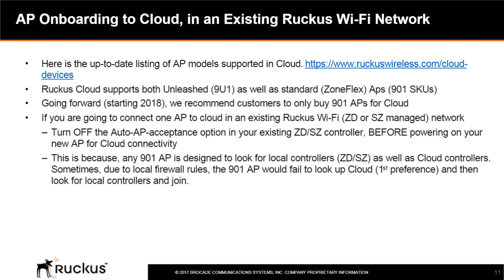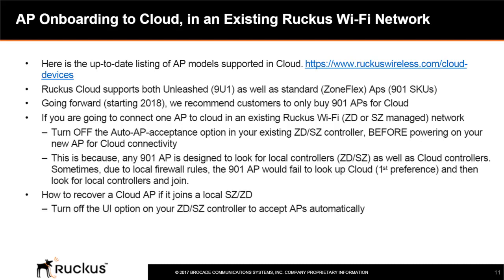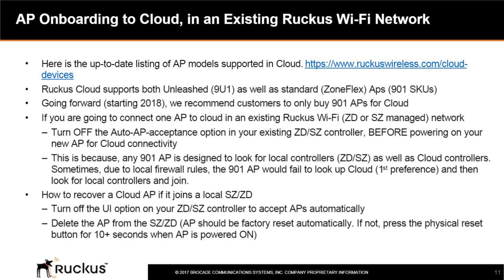Any 901 AP is designed to look for local controllers such as Zone Director or Smart Zone, as well as cloud controllers. Sometimes, due to local firewall rules, 901 APs fail to look up cloud as a first preference and then join local controllers instead. If you need to recover a cloud access point after it has joined a local Smart Zone or Zone Director, turn off the option to accept APs automatically, delete the AP from Smart Zone or Zone Director, and the AP should factory reset automatically. If not, press the physical reset button for 10-plus seconds while the AP is powered on; when it reboots, it will look for Ruckus Cloud and connect.